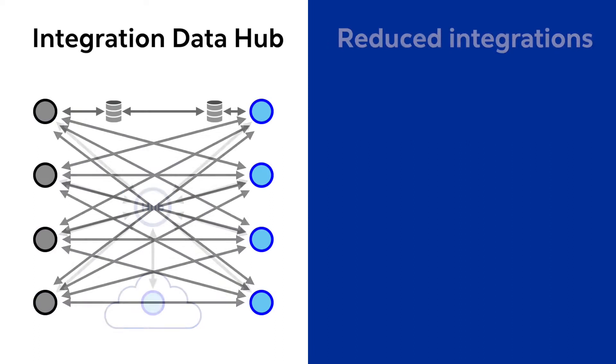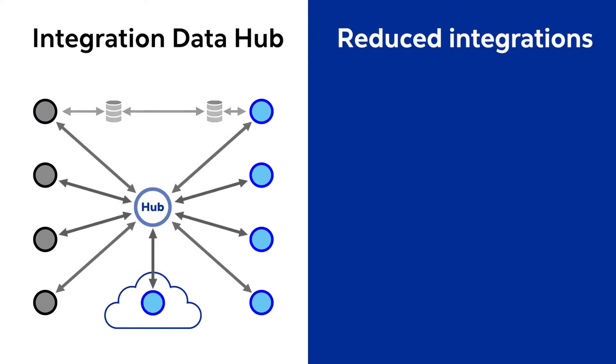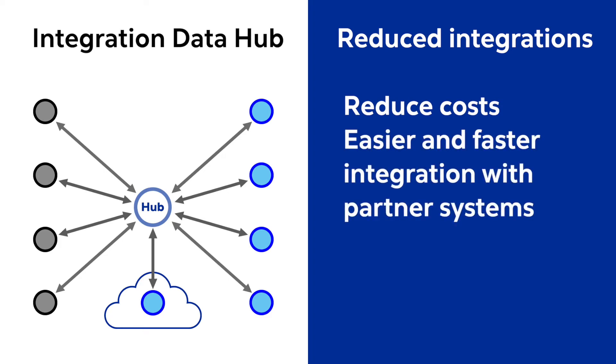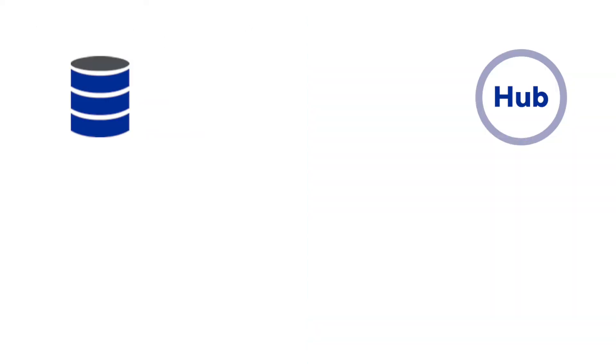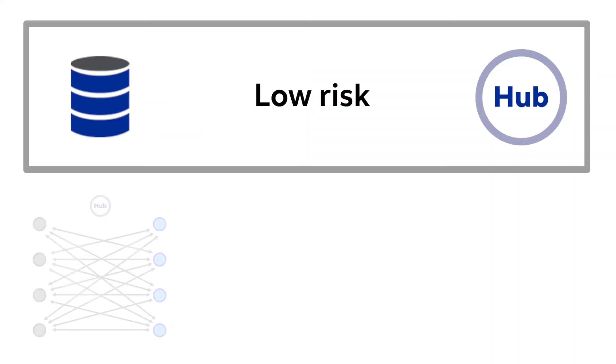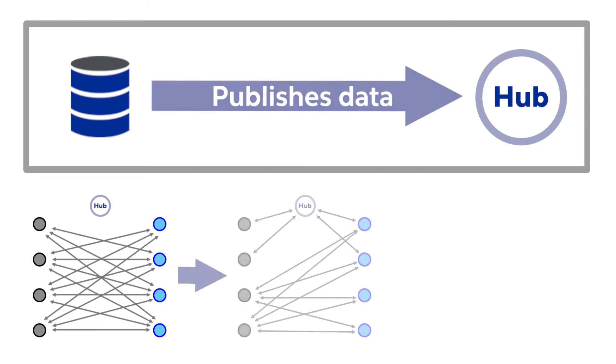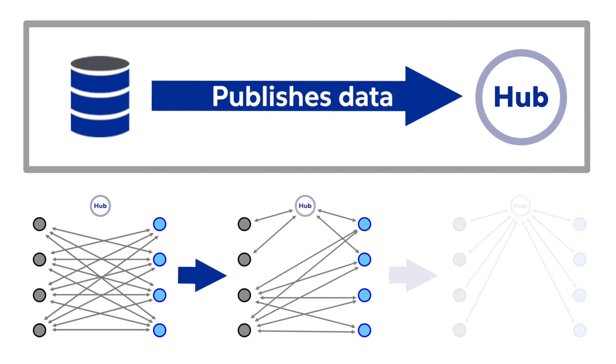And by reducing the need for maintaining integrations and intermediate databases, it reduces cost and enables easier and faster integration with internal and external partner systems. The transition journey is low risk, with systems of records gradually publishing data entities into the data hub.